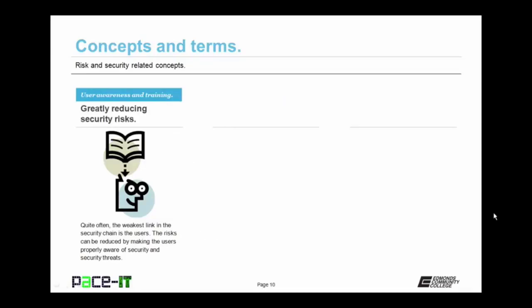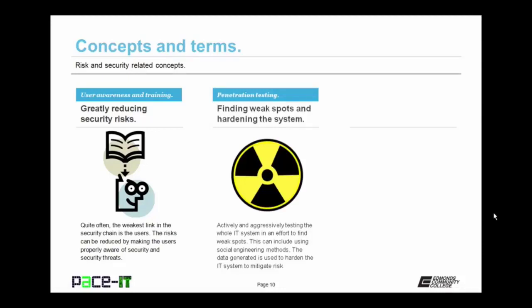User awareness and training can greatly reduce your security risks. Quite often the weakest link in the security chain is the end user. Risks can be reduced by making users properly aware of security threats through awareness and security training. This training should be conducted on an ongoing basis — it's never a one and done thing. Penetration testing is the finding of weak spots and the hardening of systems. It actively and aggressively tests the whole IT system to find weak spots, including using social engineering methods on end users.